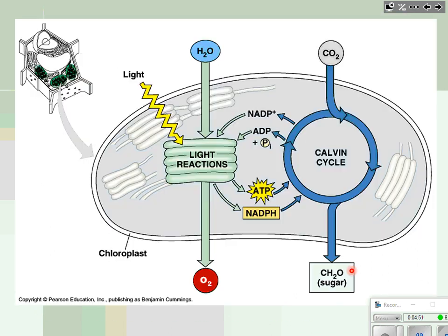Last time we focused mainly on the light-dependent reactions: how light energy absorbed by chlorophyll excites electrons, causes them to move down the electron transport chain, and ultimately results in the production of two important high-energy molecules — ATP and NADPH. We also learned that the light reactions involve water molecules being split, which releases oxygen as a byproduct. Today we're going to turn our focus to the Calvin cycle — the second half of photosynthesis.